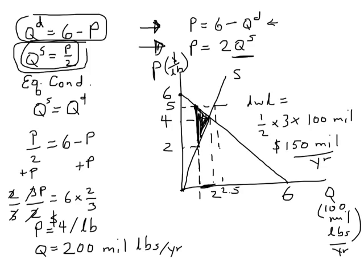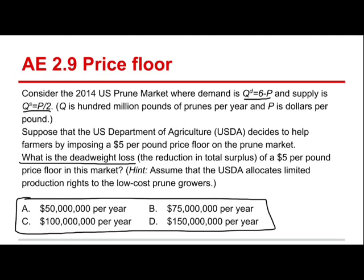Let me go back. I crashed my doodle cast program, but anyway, we see that our answer would be D, 150 million per year.